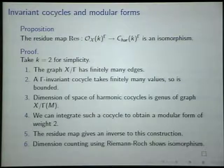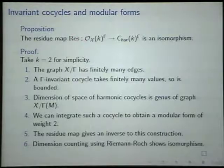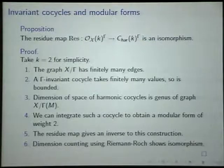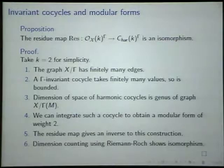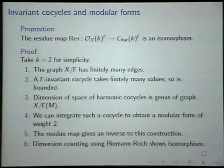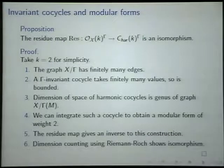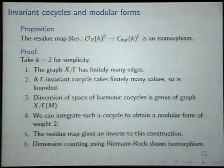In the k equals 2 case: think back to the picture of the two lines and that little graph with edges. The X mod gamma graph has finitely many edges. A gamma-invariant harmonic function on the tree is just labeling the edges of the quotient graph so the net inflow and outflow at each vertex is zero. Such a thing is automatically bounded because its values on the whole tree are just translates of its values on the finitely many initial edges. By the integration result, the dimension of the space of harmonic co-cycles is just the genus of the graph. In my example there were three linearly independent harmonic functions. By integration theory you can integrate back to get a modular form of weight 2, and the residue map is an isomorphism between these two spaces. The genus of the graph equals the algebraic genus of the curve.